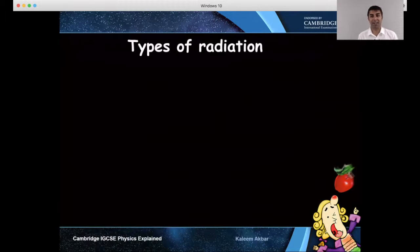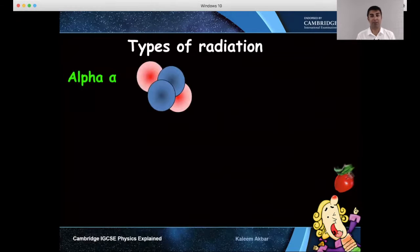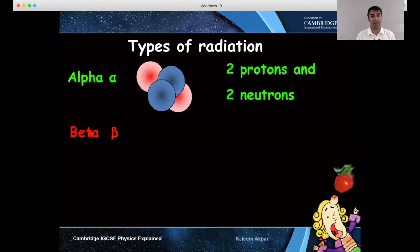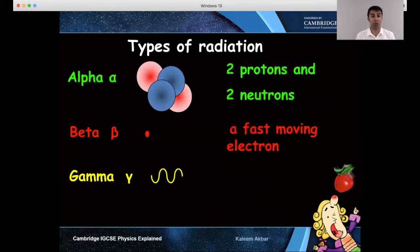Let's begin by looking at the different types of radiation. The three radiations you need to learn about are called alpha, beta and gamma. Alpha is essentially a helium nucleus. It has two protons and two neutrons. It has no electrons because we're talking about the nucleus itself.